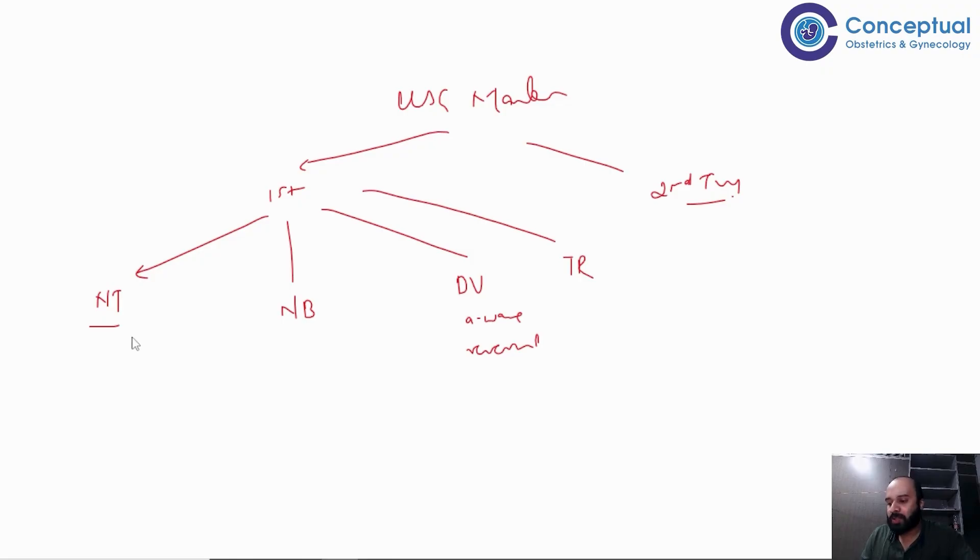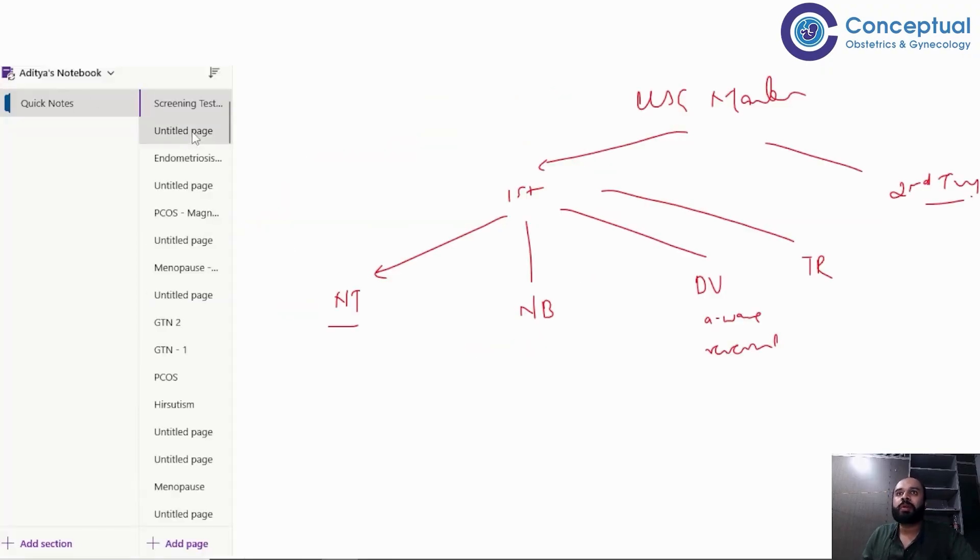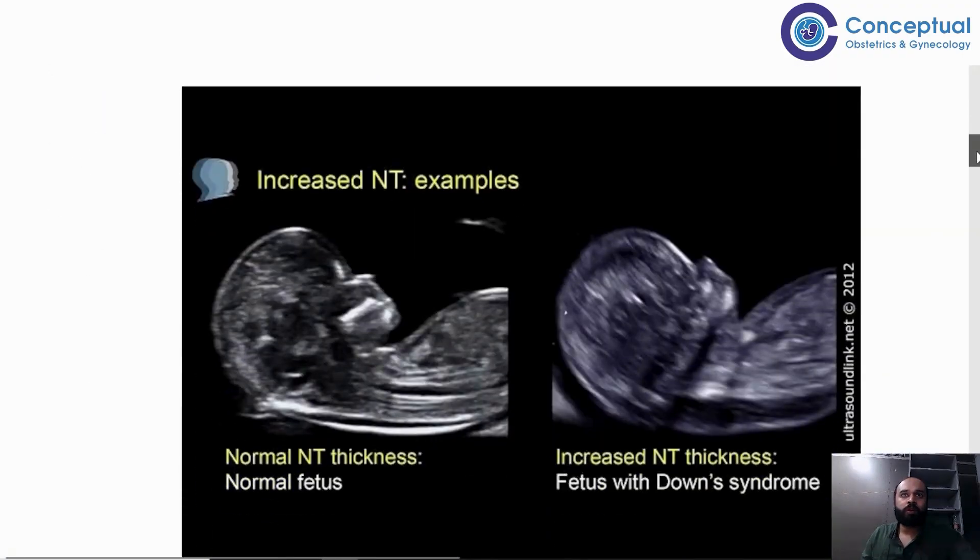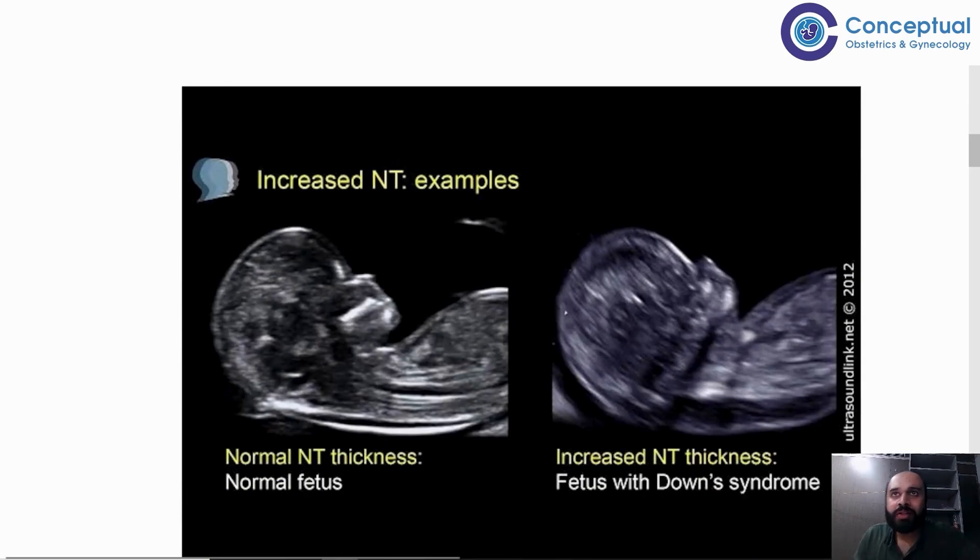Starting with nuchal translucency. What is nuchal translucency? First I am going to show through photos. This is what nuchal translucency looks like. You see that over here, this in red is your skin and this is your posterior wall of the body, the area between the skin.